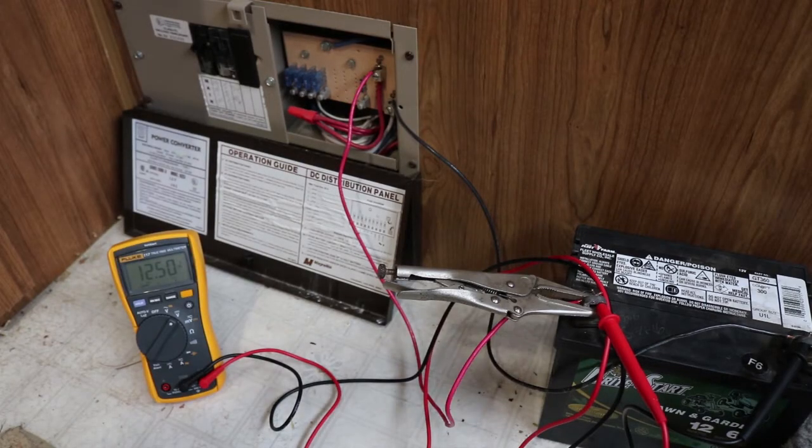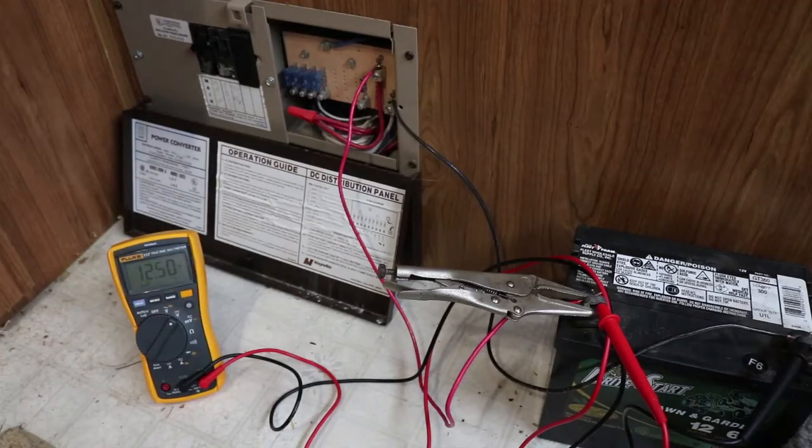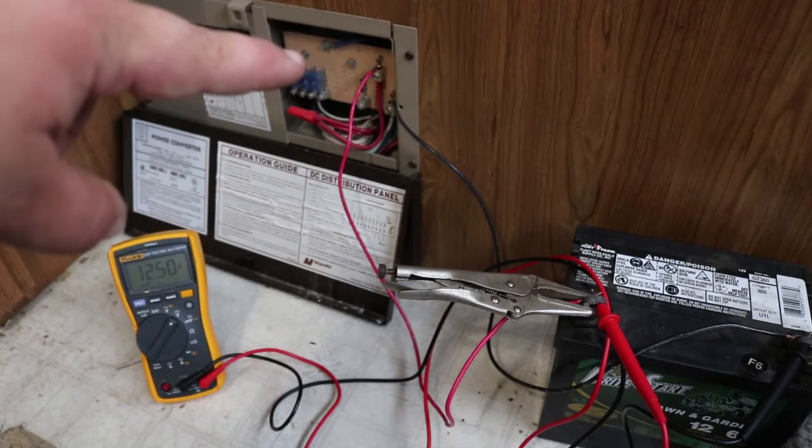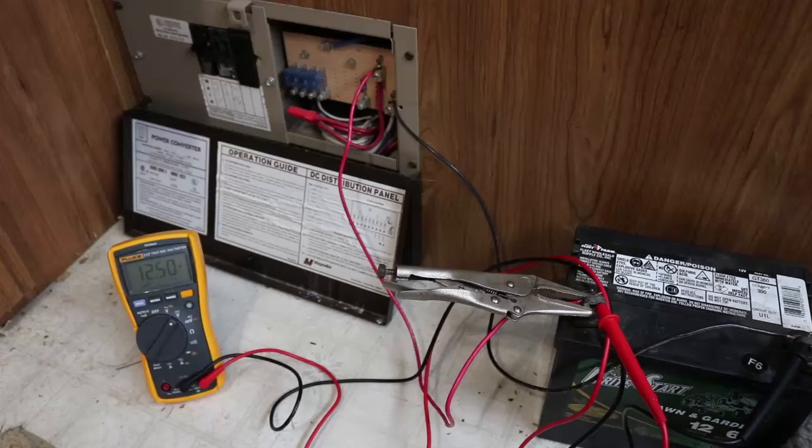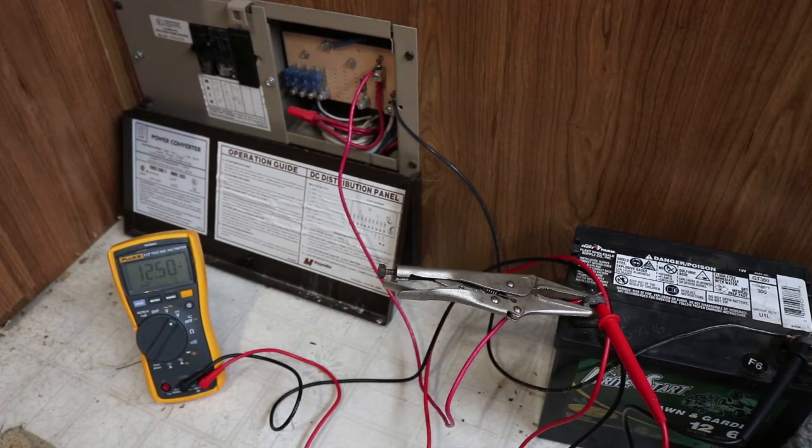So what I did is I took this battery here out of my garden tractor, which works the same, and I hooked it up to the 12 volt lugs on the distribution panel for the DC side direct current.